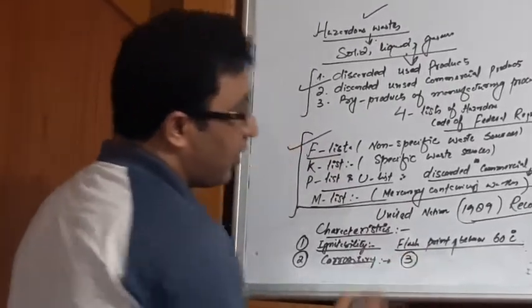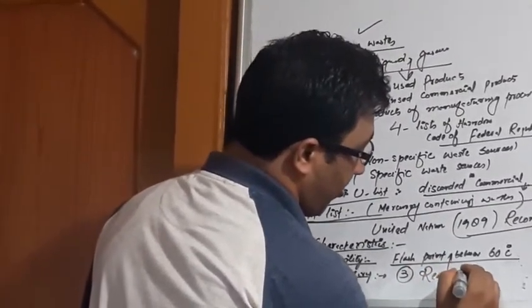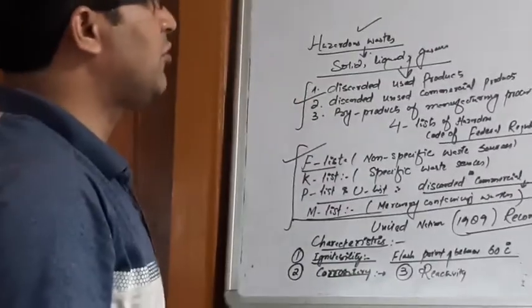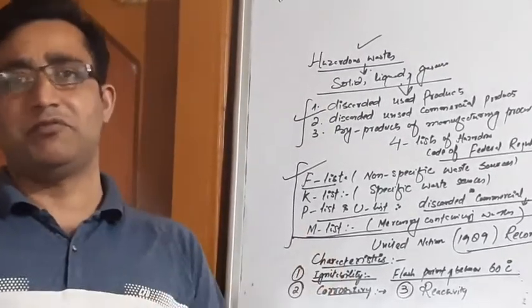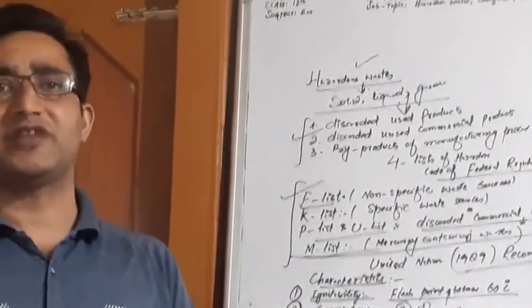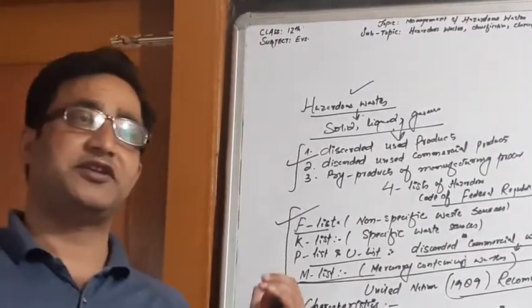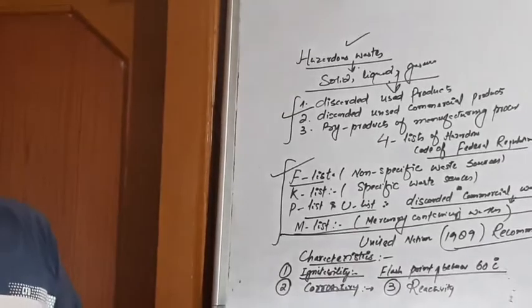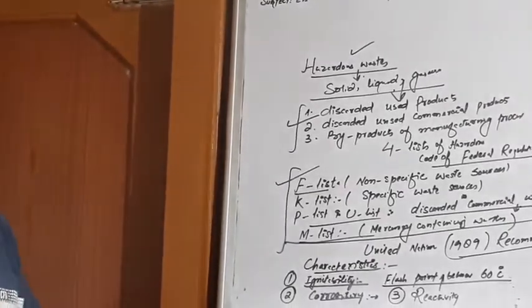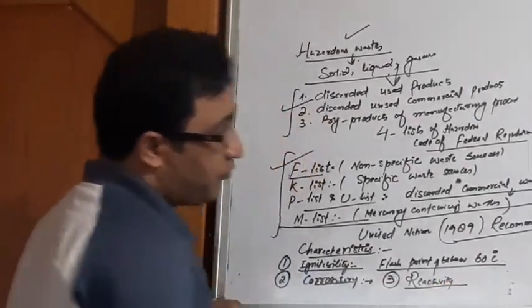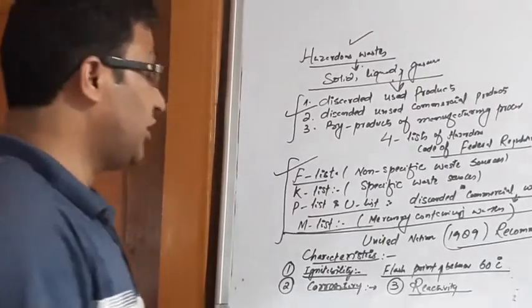The third property is reactivity. Reactivity means these wastes are very unstable and they can react to any substance and make it harmful or make it dangerous for use. If we talk about gunpowder or explosives, they may also prove very hazardous. When these wastes possess the property of reactivity, they can also be categorized as hazardous waste.